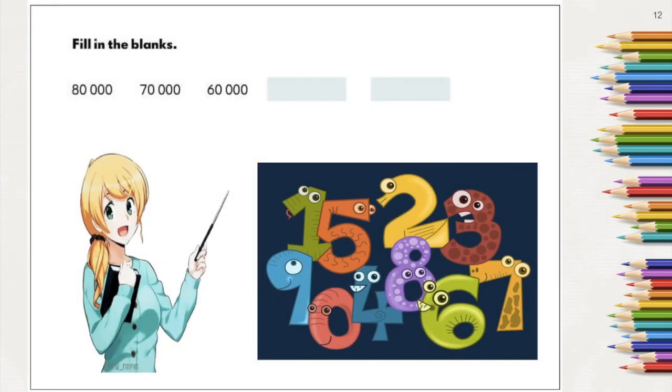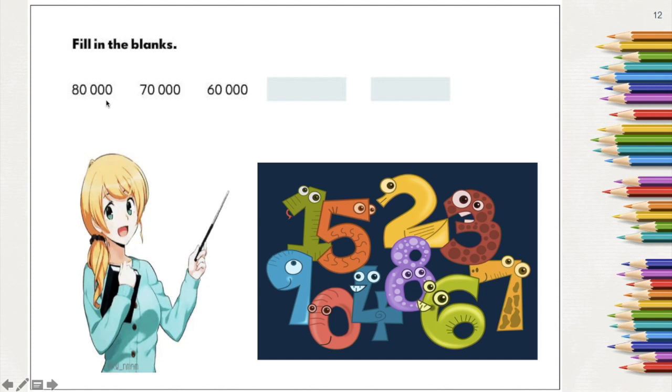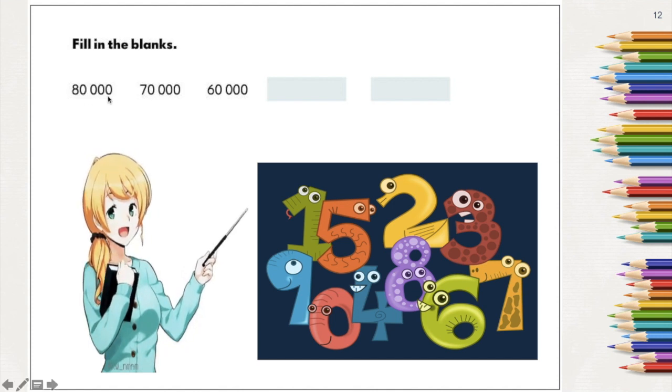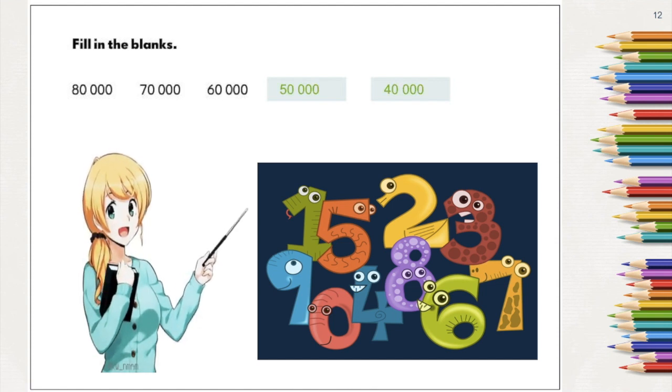I have here with me a similar number pattern, but notice that the numbers are going down this time. The difference between the first and the second number is 10,000 still. So going down, we have 80,000, 70,000, 60,000, 50,000, and 40,000.